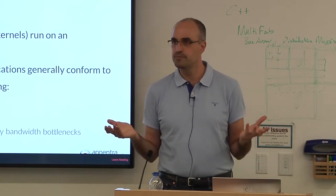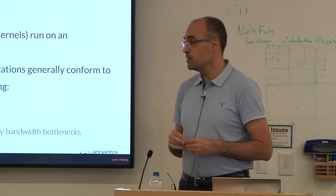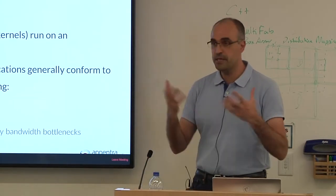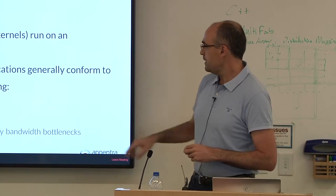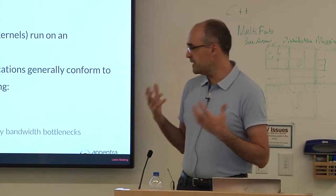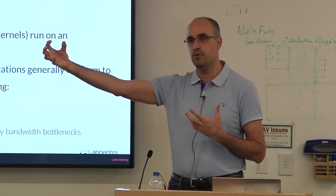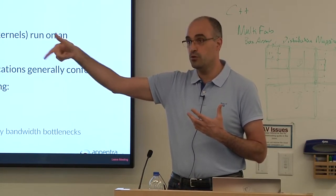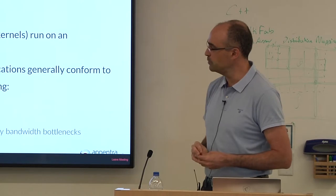Second guideline: give the device enough work to do. You have thousands of floating-point units — if you only use 10% of them, 90% remain idle. In general, you need to run large problem sizes to take advantage of the GPU's computational power. Third guideline: data reuse. Use data already on the device, either transferred at the start or computed on the GPU. Leave it there and reuse it as much as possible. Avoid data transfers.